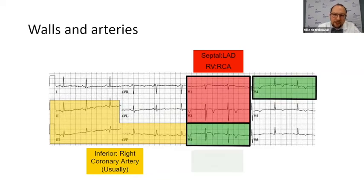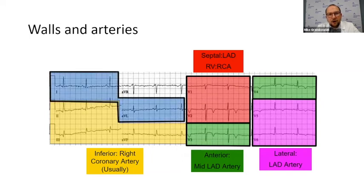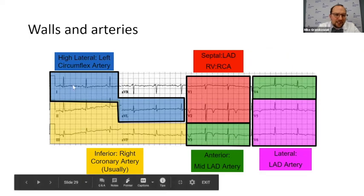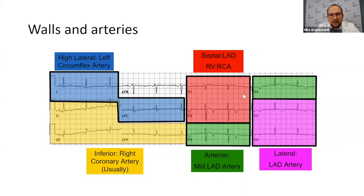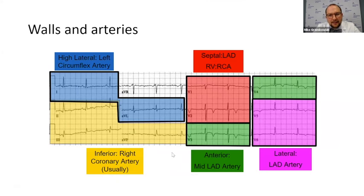The other precordial leads are basically the rest of the LAD territory. V3 and V4 represent the anterior wall, corresponding to the mid-LAD. V5 and V6 represent the lateral wall, which is also represented by leads 1 and AVL. If you have isolated ST elevations in 1 and AVL, those are called the high lateral leads, which usually indicate left circumflex territory rather than LAD — especially if you see elevations in V5 and V6 but not in other precordial leads.